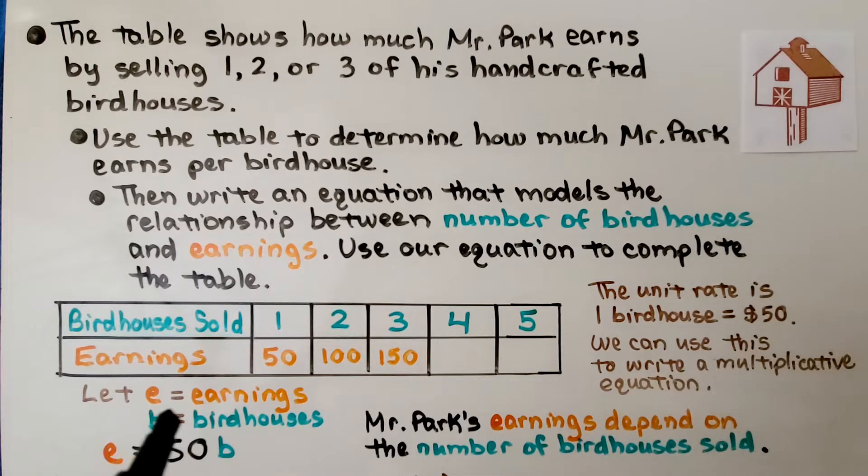We can let E equal the earnings and B equal birdhouses. The earnings are equal to 50 times the number of birdhouses. Mr. Park's earnings depend on the number of birdhouses sold.